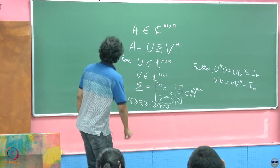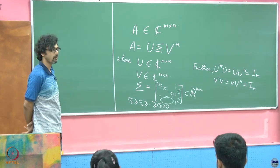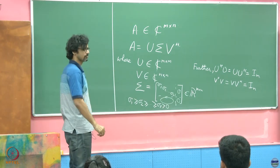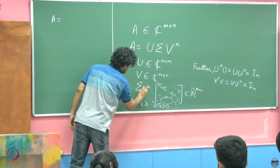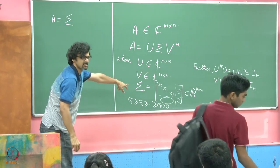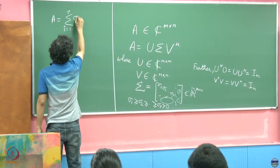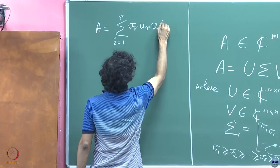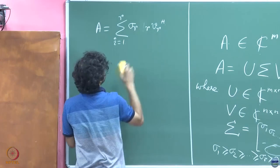Now in view of this, I shall write this down in a slightly different form — one that you should immediately be able to relate to. A is equal to the summation i going from 1 through r of σᵢ yᵢ vᵢ^H.